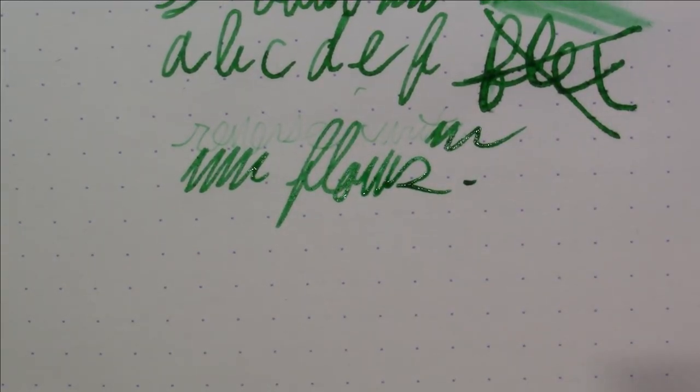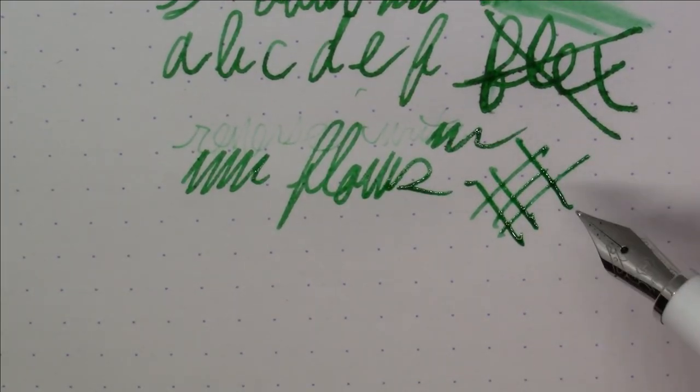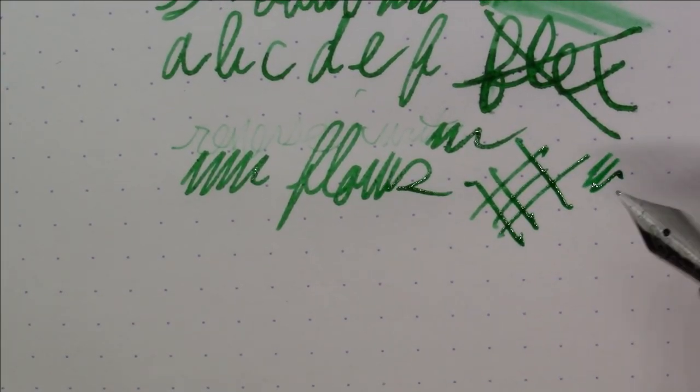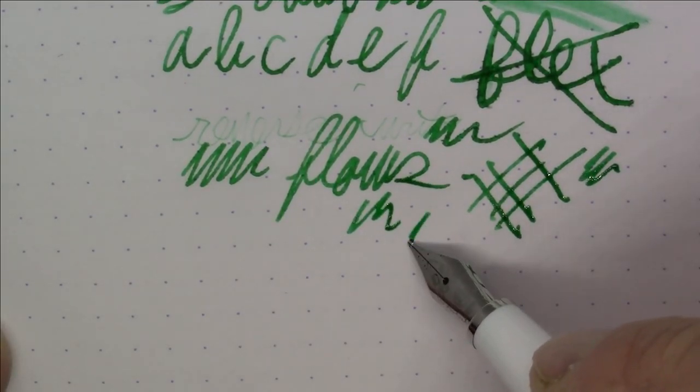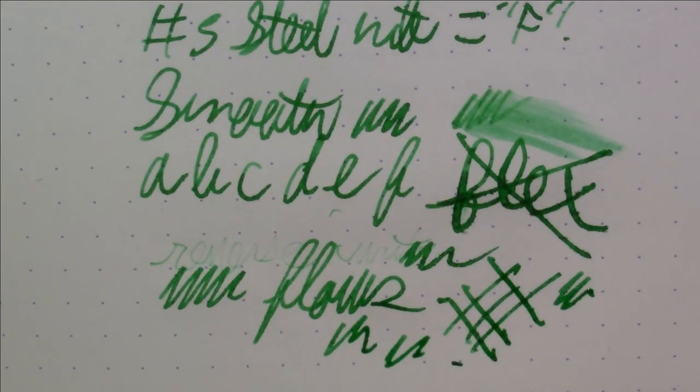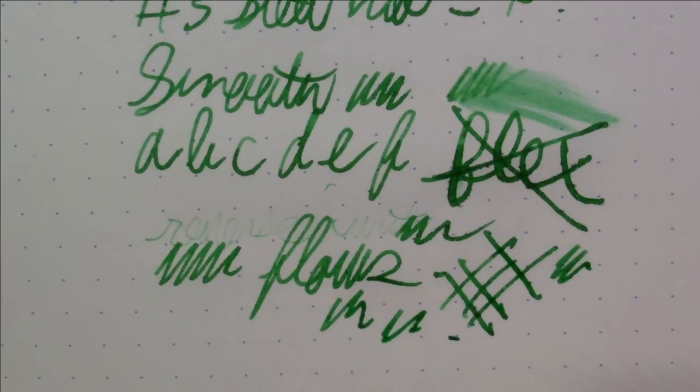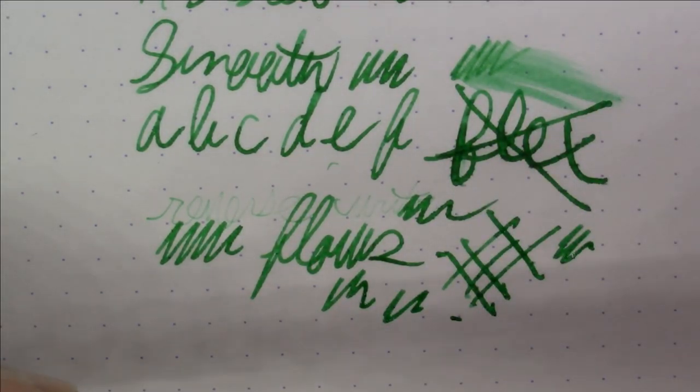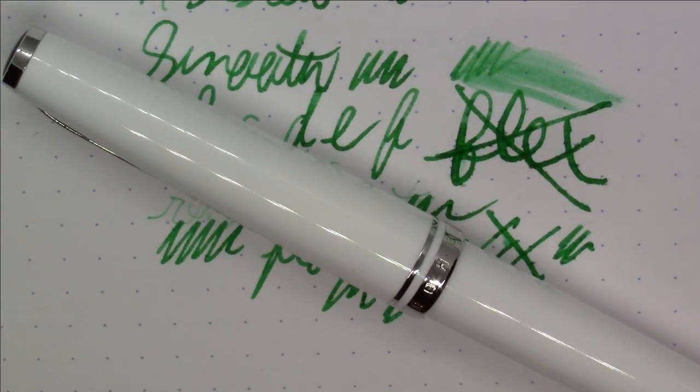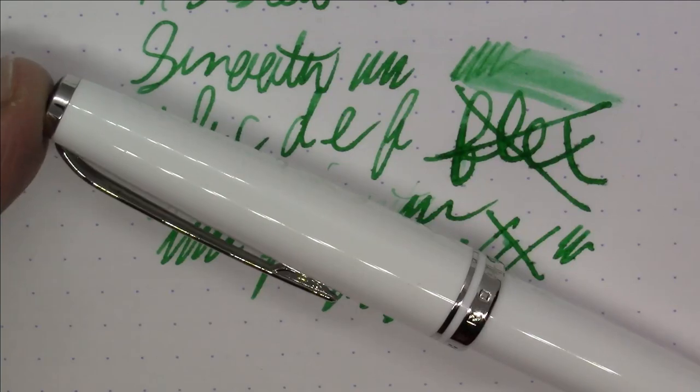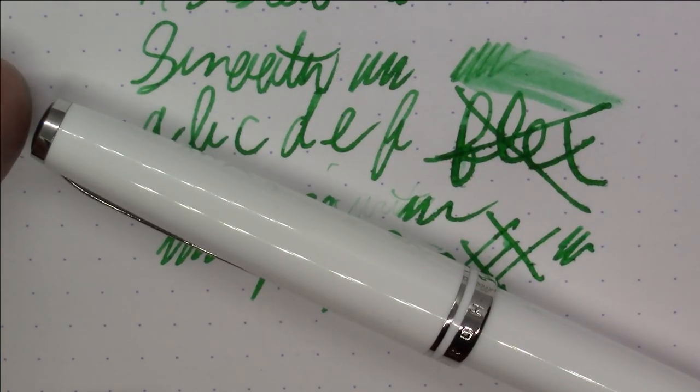But really nice flow. I really like this. It's a very comfortable writing experience, I have to say. This nib, I didn't tune this or anything. This is straight out of the box and it writes really well. Very happy with the way this writes. So all in all, we got a winner this week, I think. This is a really nice writing pen from Hero, the 981-2.